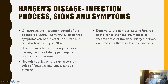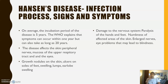The infection process — signs and symptoms. On average, the incubation period of the disease is about five years. The WHO explains that symptoms can occur within one year but can also take up to 20 years. The disease affects the skin, peripheral nerves, mucosa of the upper respiratory tract, and the eyes — including the nose, mouth, and lips. Once this occurs, you see growth nodules on the skin, ulcers on the feet, swelling, lumps, and earlobe swelling. The disease also damages the nervous system, causing paralysis of the hands and feet, numbness of affected skin areas, enlarged nerves, and eye problems that may lead to blindness — very creepy stuff. You definitely don't want to catch this.